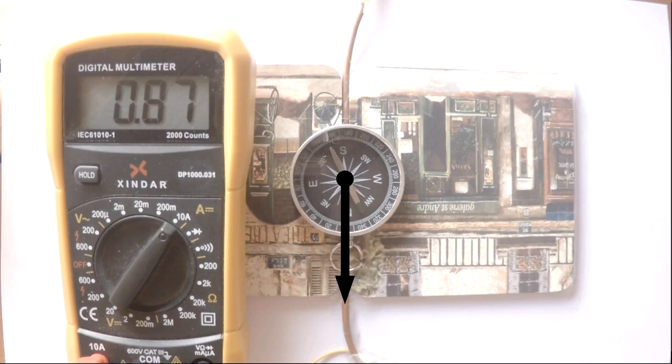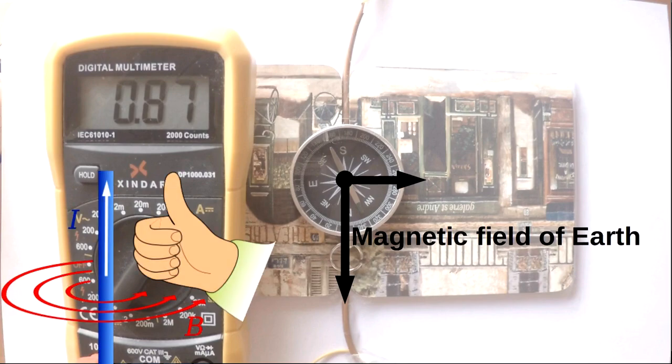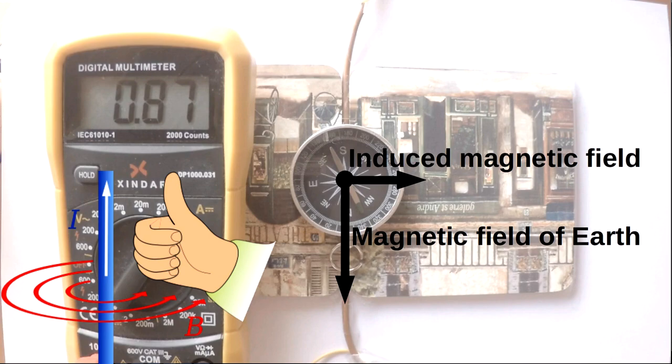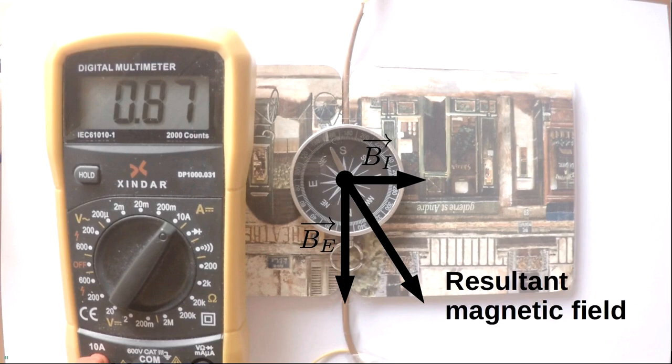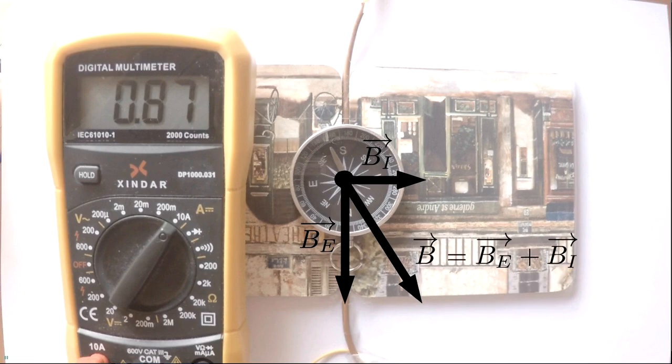Moving charges on the wire induce a magnetic field. The induced field's direction follows the right hand rule. The sum of vectors of the induced magnetic field and Earth's magnetic field create a new magnetic field. This new field is the strongest one around the compass.